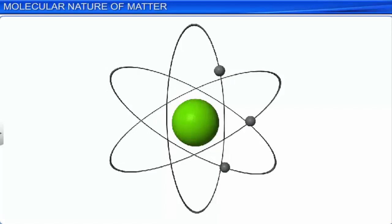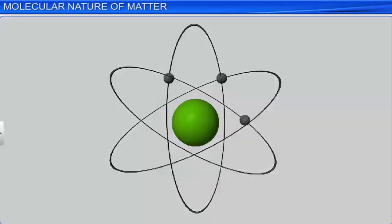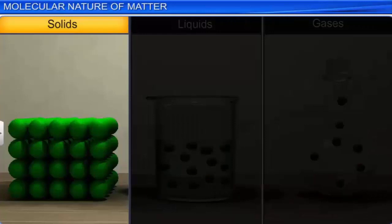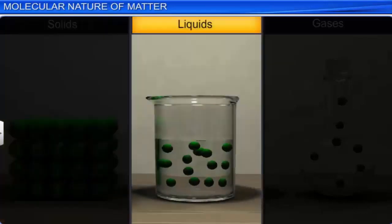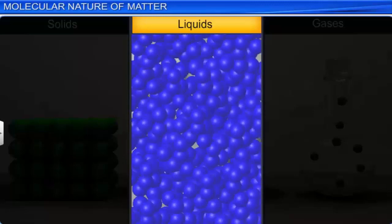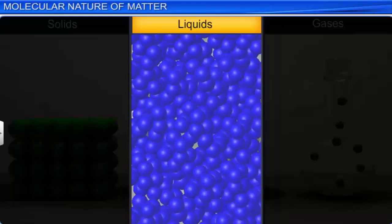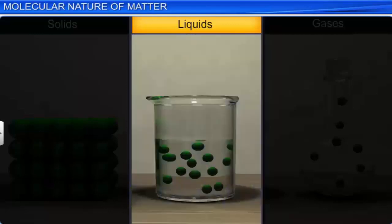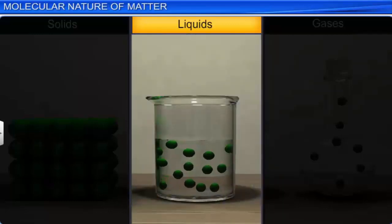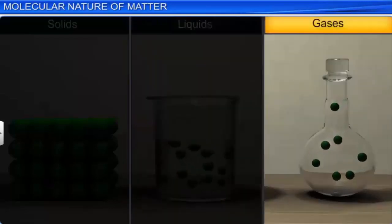Generally, the size of an atom is about an angstrom unit, which is equal to 10 raised to the power minus 10 m. In solids, the inter-atomic separation is very small, approximately 2 angstrom. In liquids, the atoms are also separated by 2 angstrom, but the atoms of liquids are less rigid than those of solids, and hence the liquid can flow. In gases, the inter-atomic separation is very large, approximately 10 angstrom.